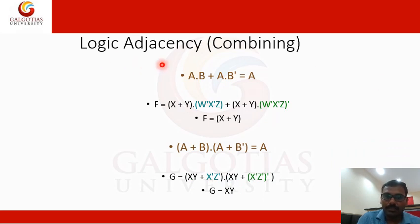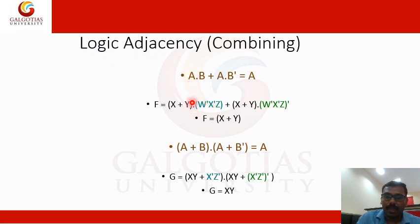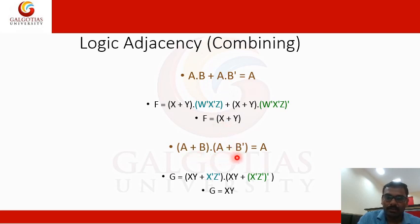The logical adjacency law: if we have AB plus AB dash, taking A outside gives A(B plus B dash), which equals 0 — wait, B plus B dash equals 1 — so we get A. This law is used to solve various Boolean expressions. Similarly, (A plus B) dot (A plus B dash) equals A, and this can also be proved.